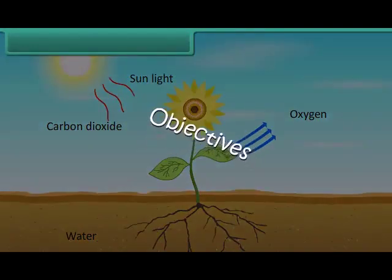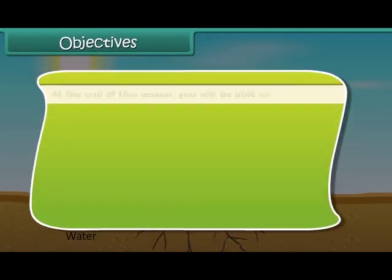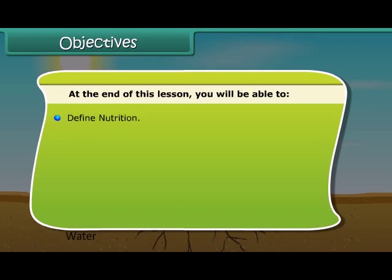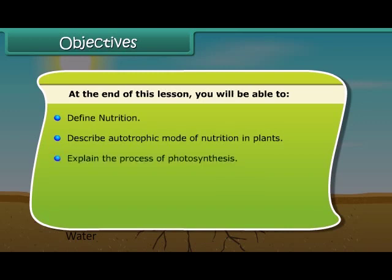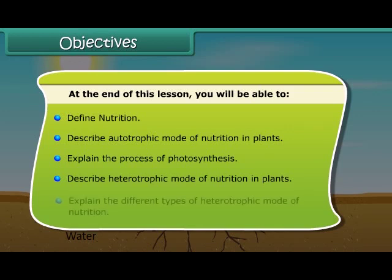Objectives. At the end of this lesson you will be able to: define nutrition; describe autotrophic mode of nutrition in plants; explain the process of photosynthesis; describe heterotrophic mode of nutrition in plants; and explain the different types of heterotrophic mode of nutrition.